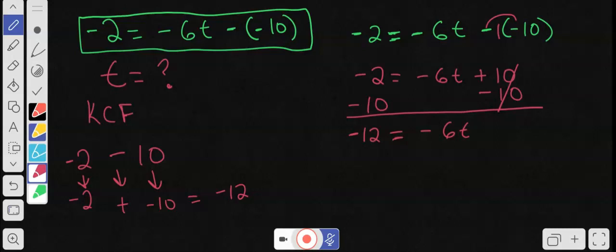You can also use it for other integers that you're subtracting as well. So now you have negative 12 equals negative 6t. Next thing I need to do, I need to divide the negative 6 on both sides so I can leave the t alone.